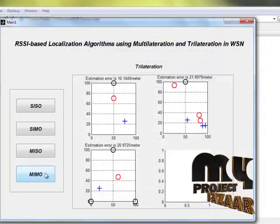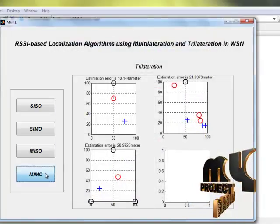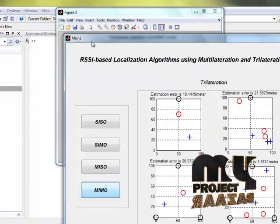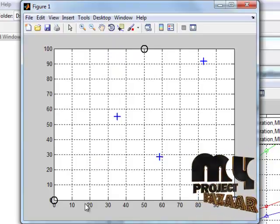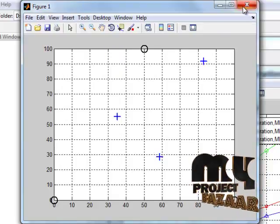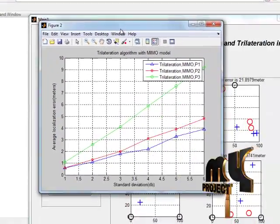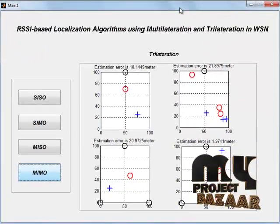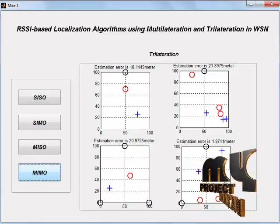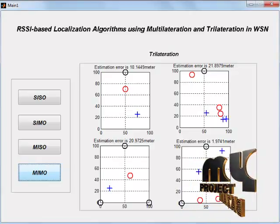And finally for multi input with multi output. Here the inputs are multiple and output also multiple. It is the graph plotted for trilateration algorithm with MIMO model. These are the anchor nodes. These are the mobile nodes. And the red color is the location of mobile node which is estimated.